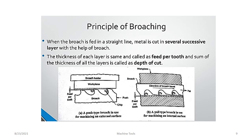The principle of broaching is to cut several successive layers of metal with the help of the broach. The thickness of each layer is the same — it is called the feed per tooth — and the sum of the thicknesses of all the layers is called the depth of cut.